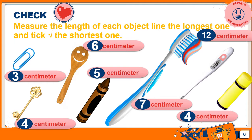Now let's find the longest and shortest. Remember: underline the longest and tick the shortest. The toothbrush is the longest at 12 cm, so let's underline it. The paper clip is the shortest at 3 cm, so let's tick it. Now you know how to measure!